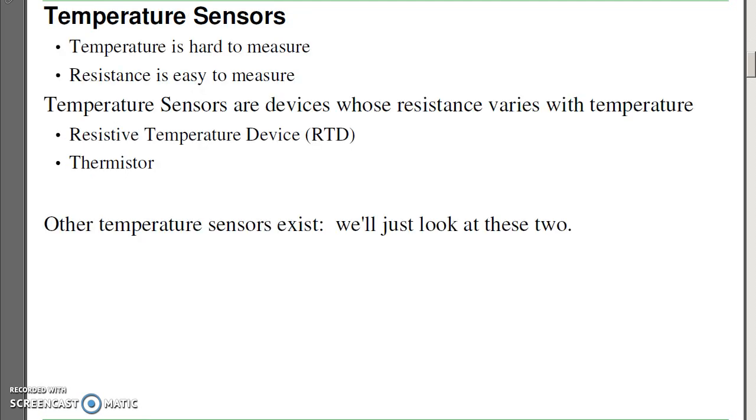To give us something concrete to look at, let's look at temperature. Temperature is difficult to measure directly. However, resistance is easy to measure. So if I have a temperature sensor, which is a device where the resistance varies with temperature, I can then measure temperature.